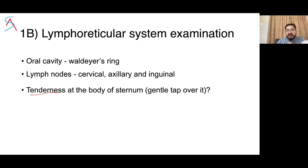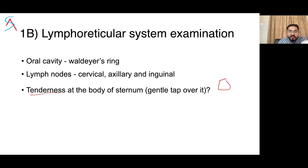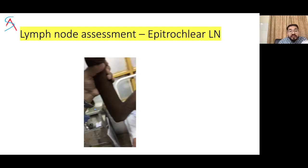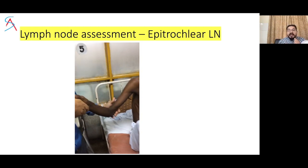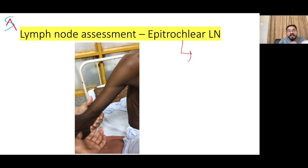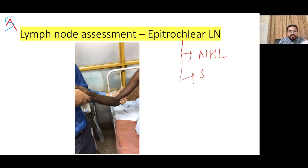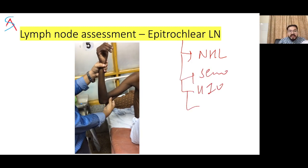Sternal tenderness is assessed by gentle tapping over the sternum. It is due to bone marrow expansion or infiltration of flat bones, seen in leukemia due to extramedullary hematopoiesis, lymphoma, multiple myeloma, and chronic osteomyelitis. Tenderness over the manubrium is common. The epitrochlear lymph node is palpated in a politician's handshake style using the pulp of your thumb and is enlarged in non-Hodgkin's lymphoma, secondary syphilis, HIV, and CLL.